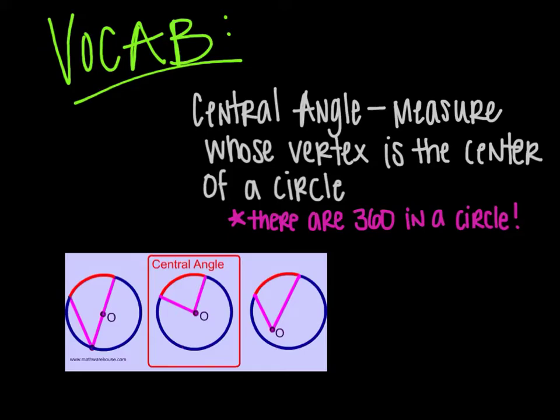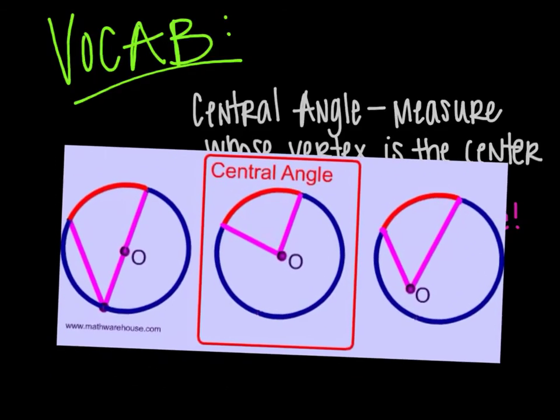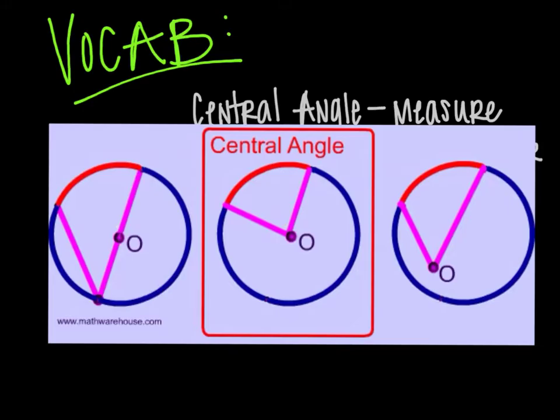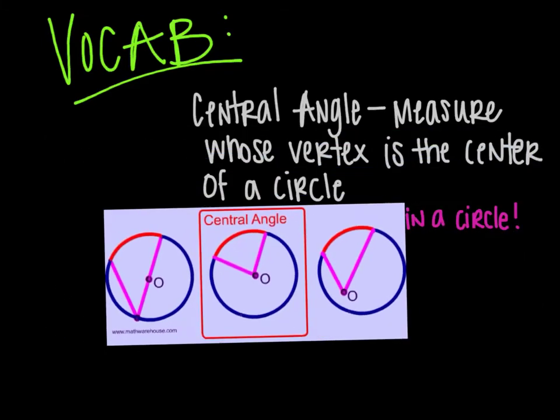Vocabulary that you need to know first is a central angle. That is a measure whose vertex is the center of a circle. And just a little FYI that there are 360 in a circle because there's 360 degrees. Here's a picture of what that looks like and what it is not. Obviously the middle one is a central angle because the point O is in the middle or the center of the circle.